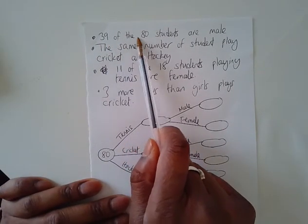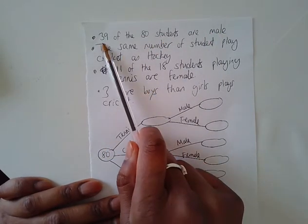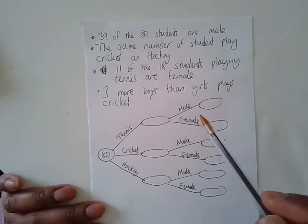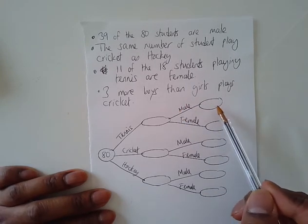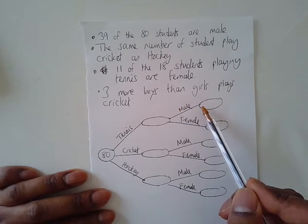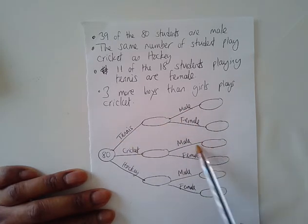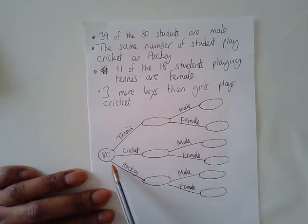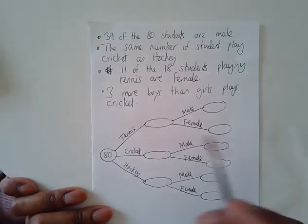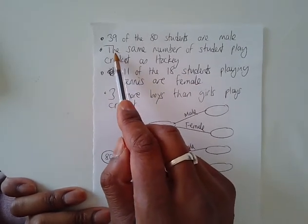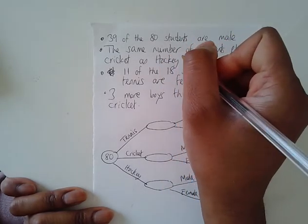39 of the 80 students are male. We know we've got 80 students altogether but 39 of those are actually male. Now don't rush into this and put, oh you see male here, put 39 there. That's not right because there are some males who play tennis, some males play cricket, some males play hockey. So we can't use our 39 number, that 39 anywhere here yet. Read on. The same number of students play cricket as hockey.